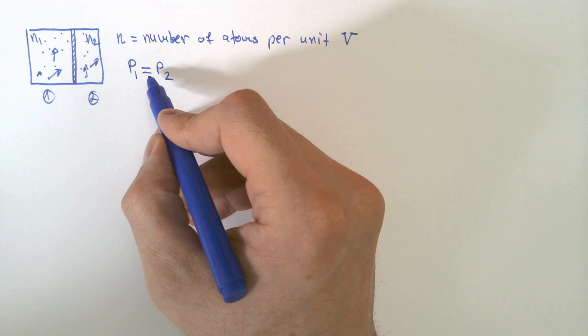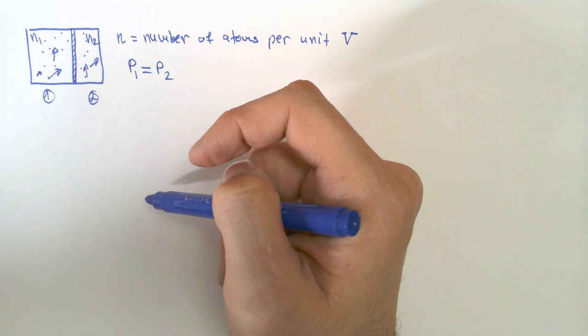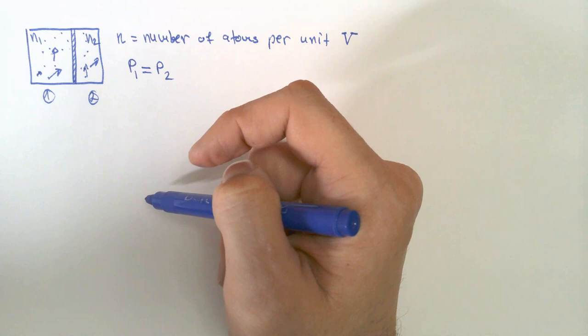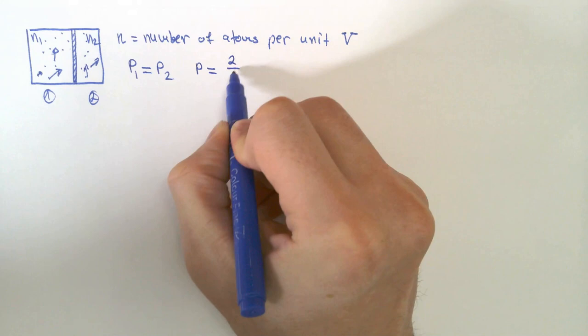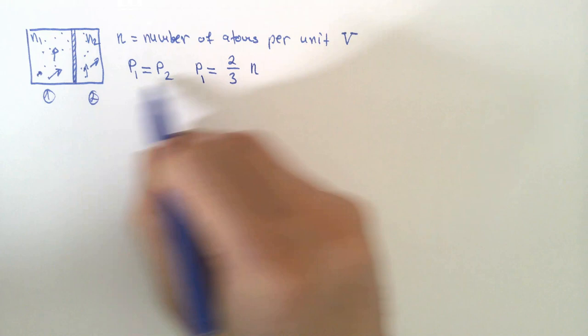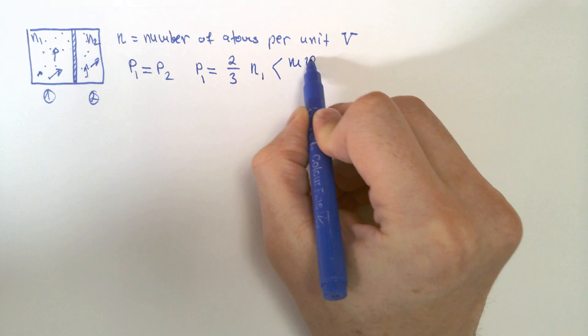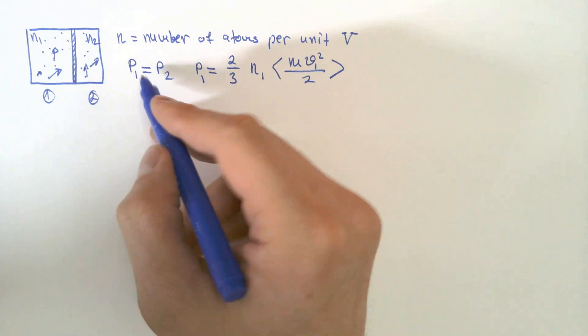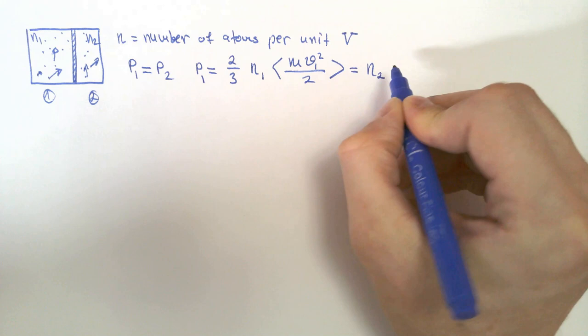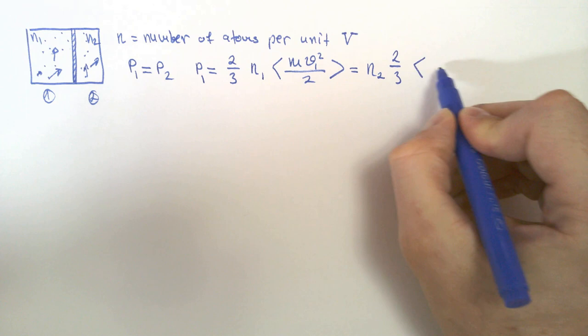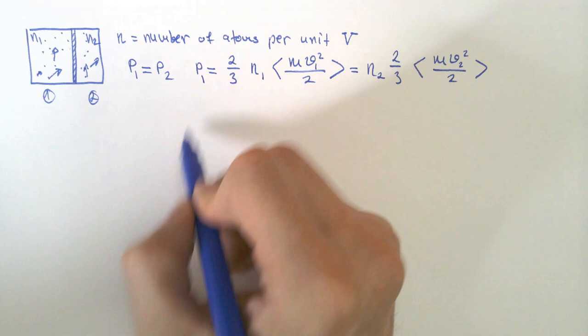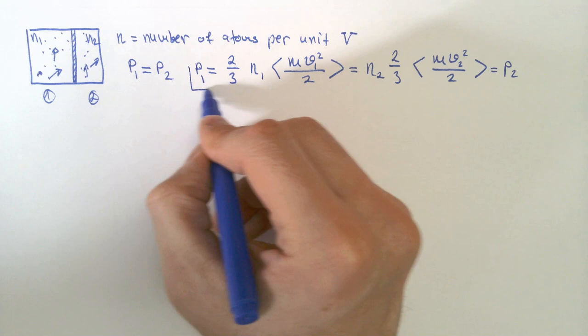Pressure means internal energies per unit volume are equal when pressures are equal. We saw that pressure equals (2/3) × N × average kinetic energy (½mv²). So for gas 1: P1 = (2/3) × N1 × average(½m1v1²), and if P1 equals P2, this must equal (2/3) × N2 × average(½m2v2²). This is the condition of equal pressures.